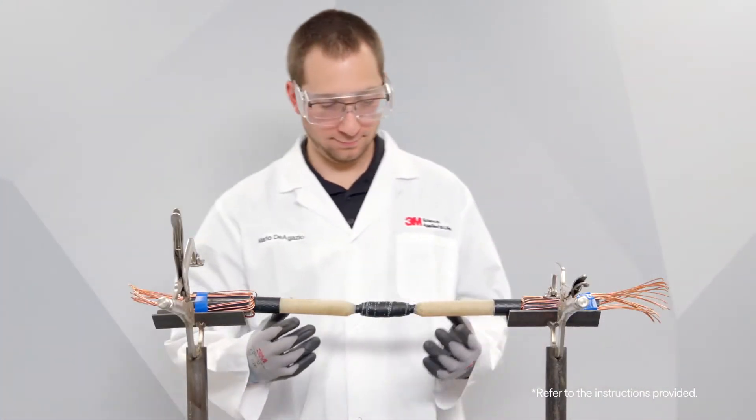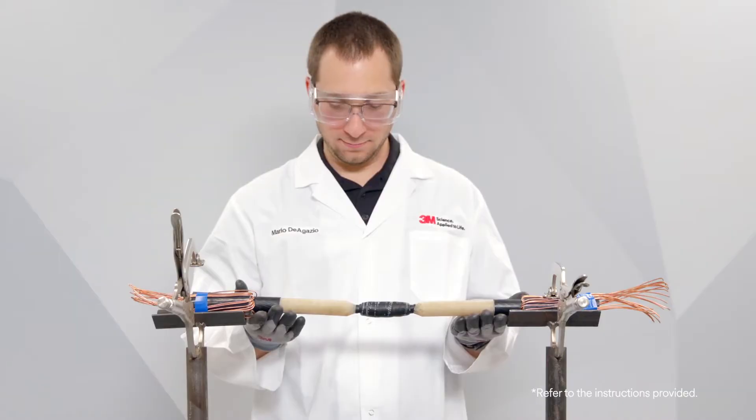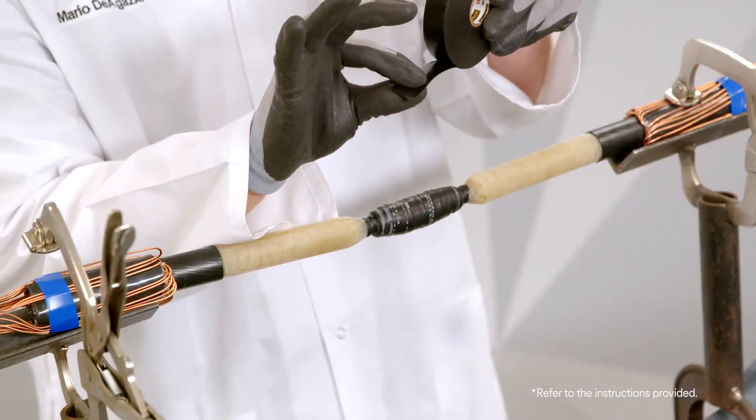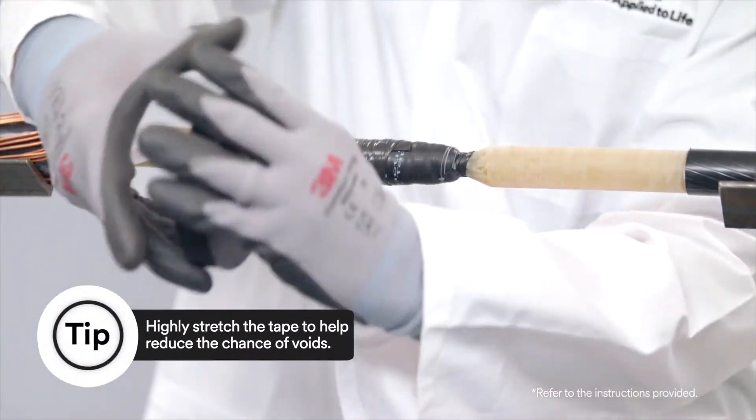Prepare cable as per standard practice. Apply Scotch Linerless Rubber Splicing Tape 130C tacky side up using highly stretched half-lapped layers.